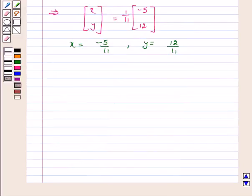Hence we have solved the above system of linear equations using matrix method and our answer is X is equal to minus 5 by 11 and Y is equal to 12 by 11. I hope the question is clear to you, bye and have a good day.